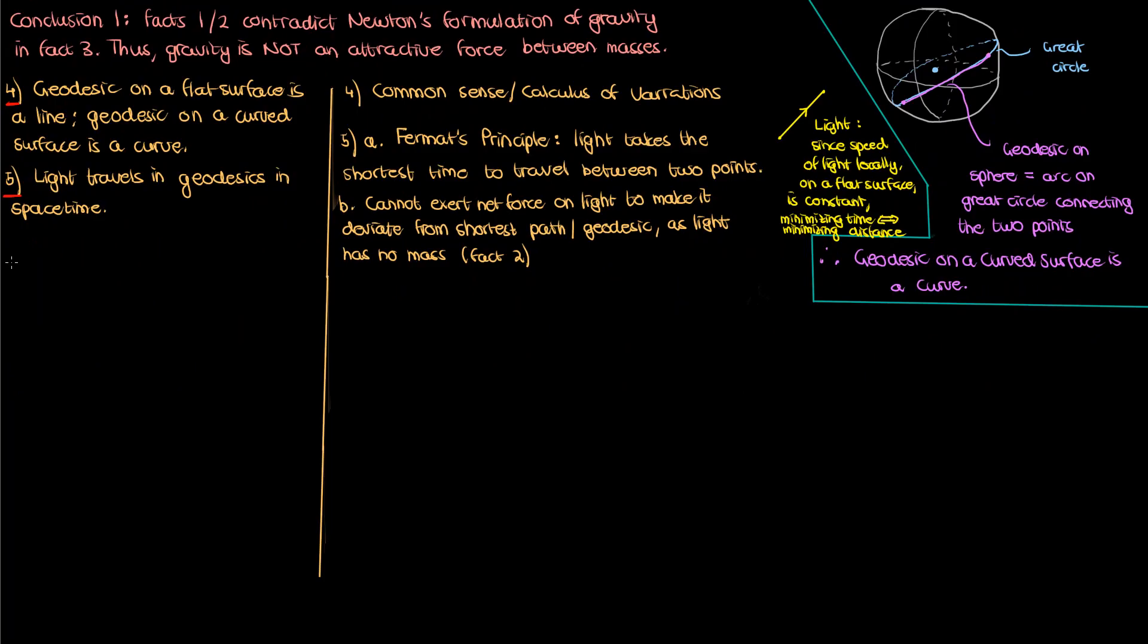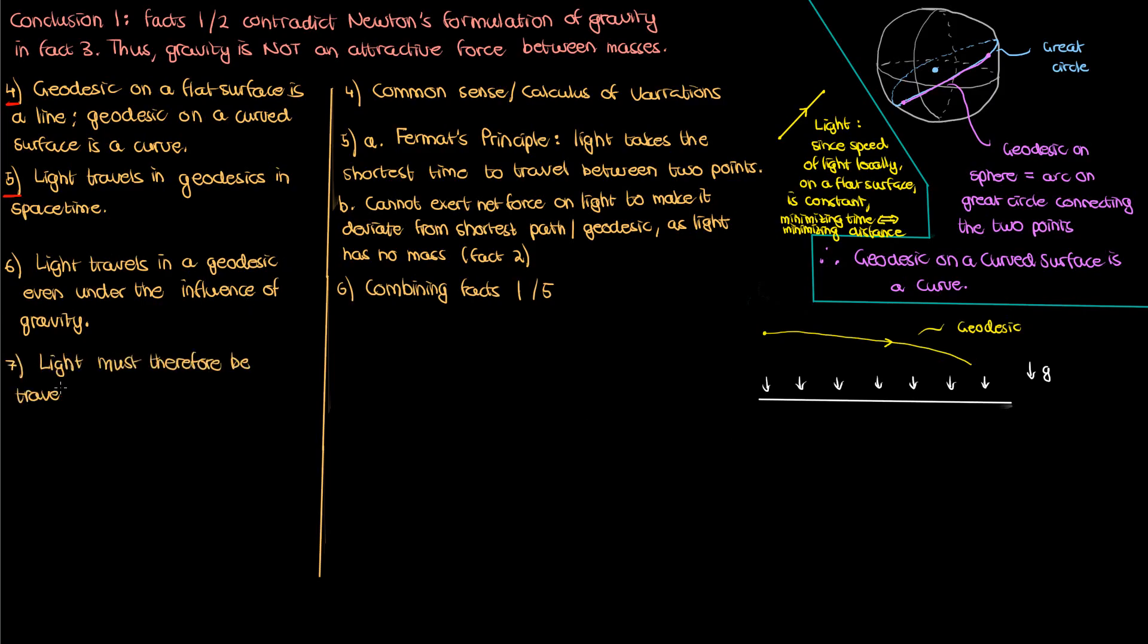Now if light bends under the influence of gravity and light only travels in geodesics, so from facts one and five, that means that even under the influence of gravity, light is still only traveling in a geodesic. Specifically, we showed that in a uniform gravitational field, light bends like so. But this curved path of light is still a geodesic from fact number five. And the only way I can get light to travel in this curved geodesic is if my ray of light is confined to a curved surface. Remember, from fact number four, a curved geodesic corresponds to a curved surface.